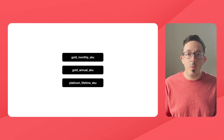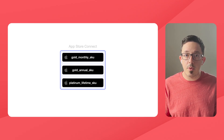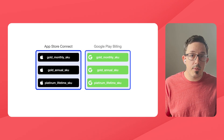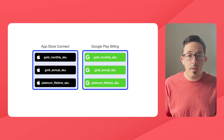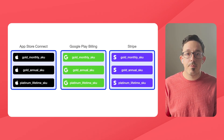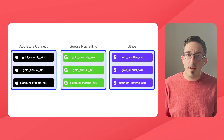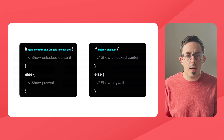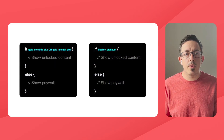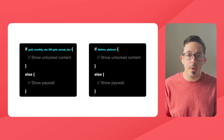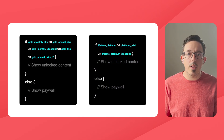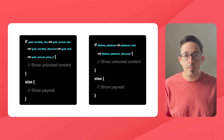We'll need to set all these products in App Store Connect for Apple, Google Play Billing for Google, and Stripe for the web. Now that we have all these products, you can see how checking for each one would start getting cumbersome in our code, especially as we add more and more products for experimenting.